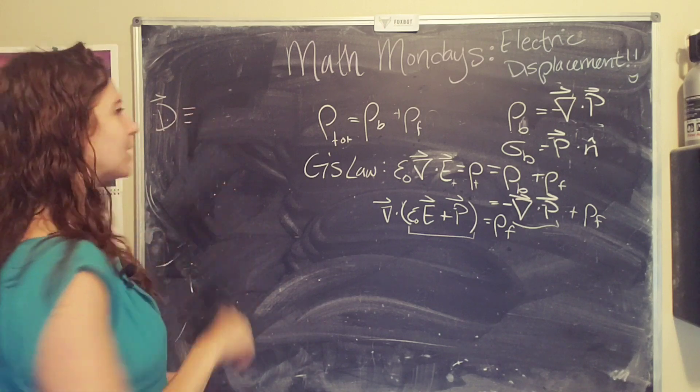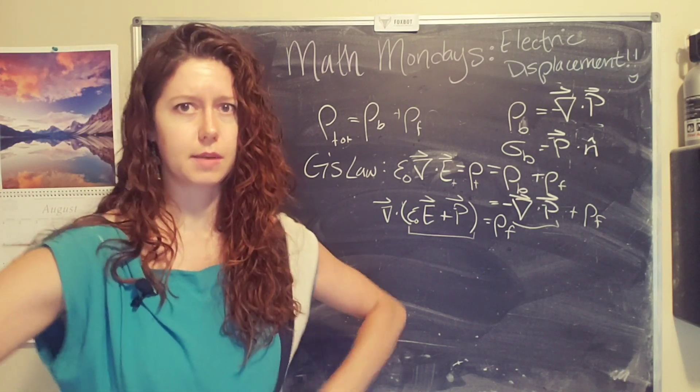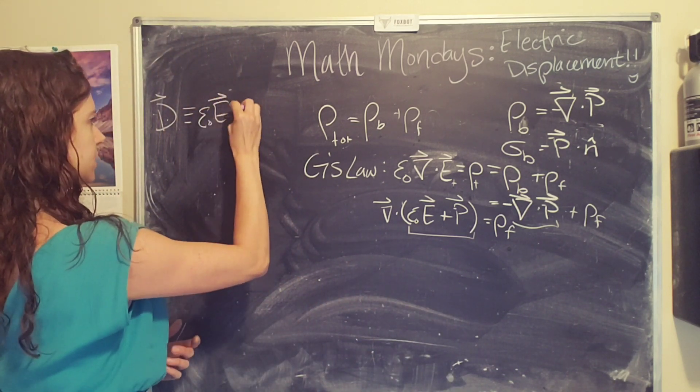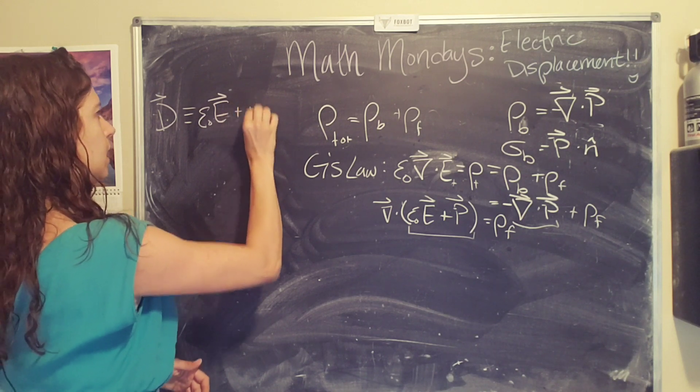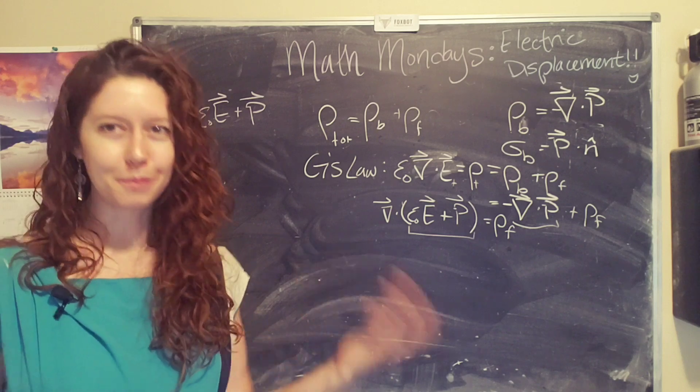So this is the definition for the electric displacement. So I'm going to use that three equal sign, which means we are very seriously defining something here. We're going to set it equal to epsilon naught times the electric field, plus the polarization of the object. Boom!